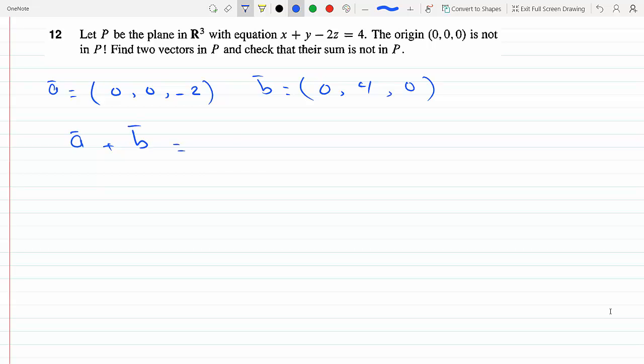Let's check if that's in the plane. Is x plus y minus 2z equal to 4? x is 0 plus y is 4 minus 2 times z which is -2. That equals 4 plus 4 is 8, that does not equal 4.